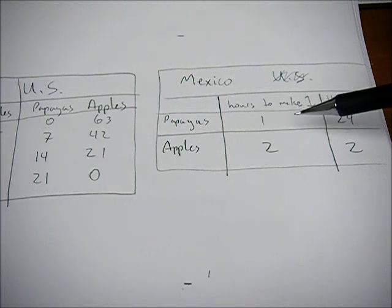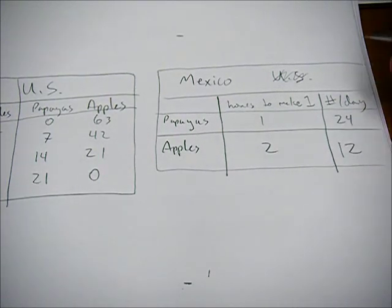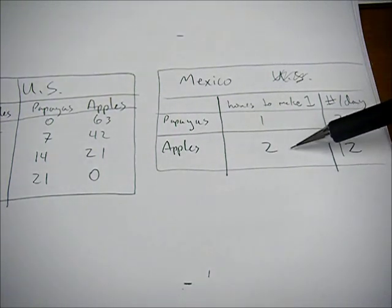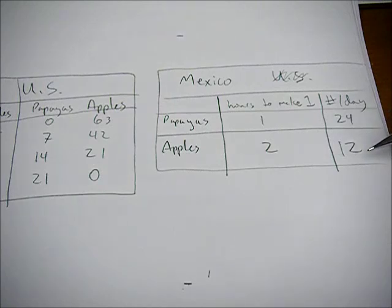For Mexico it takes them one hour to make a papaya, so they can make 24 in a day. Whereas with apples, it takes them two hours to make one, so they can make 12 in a day.